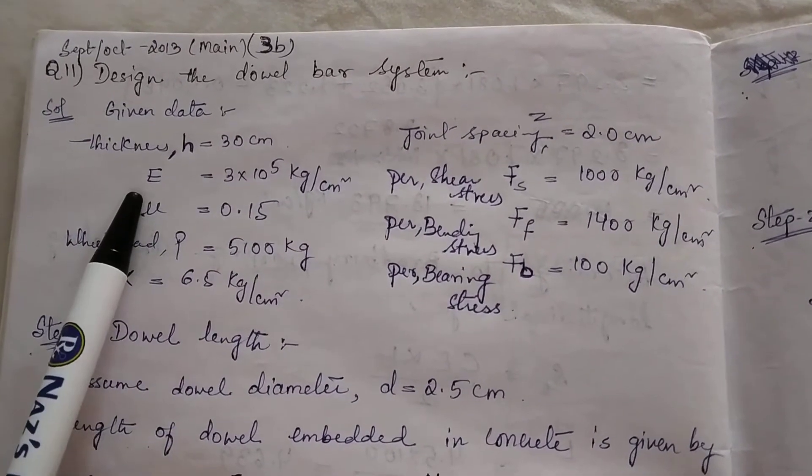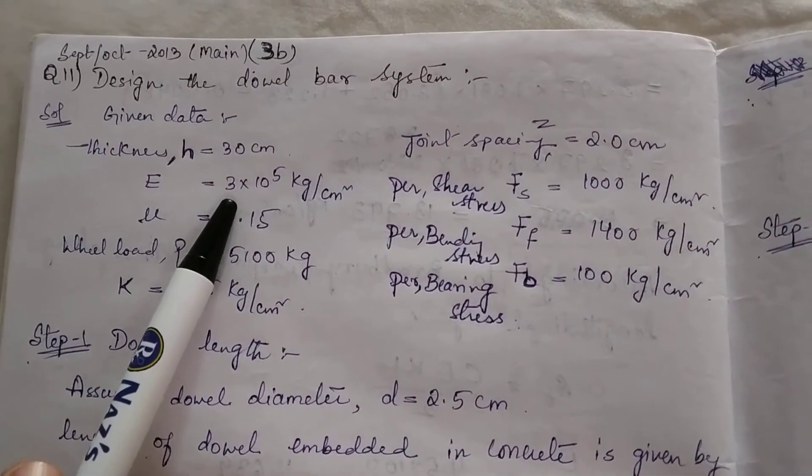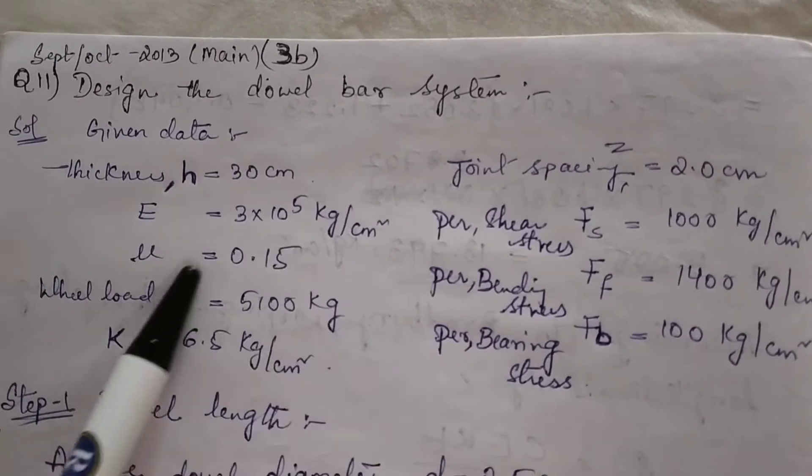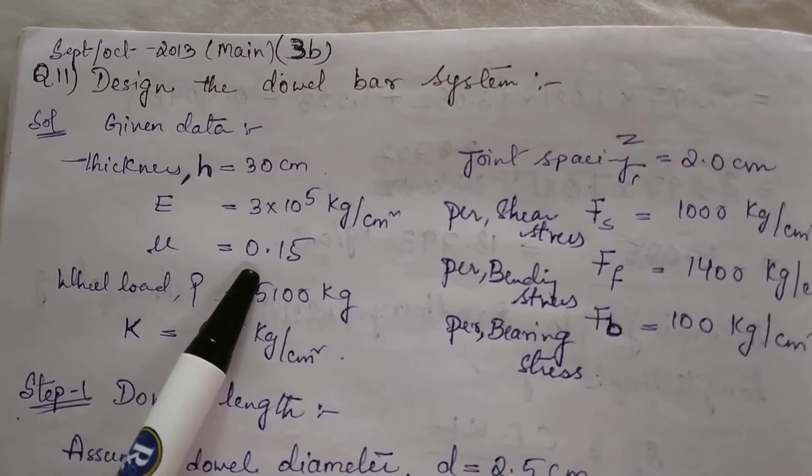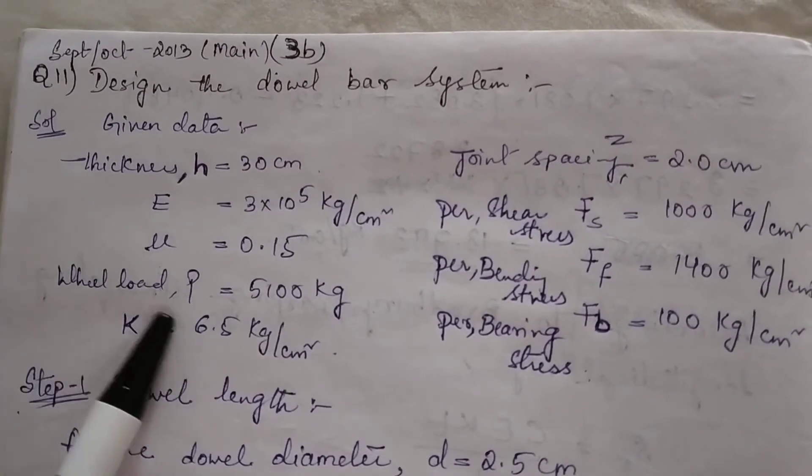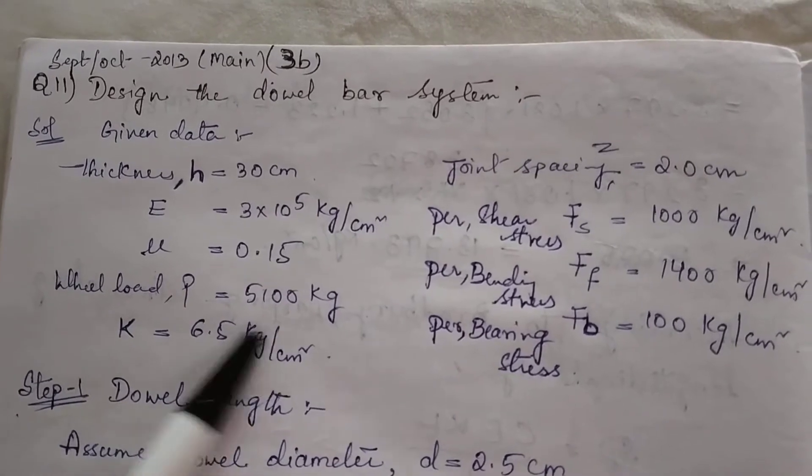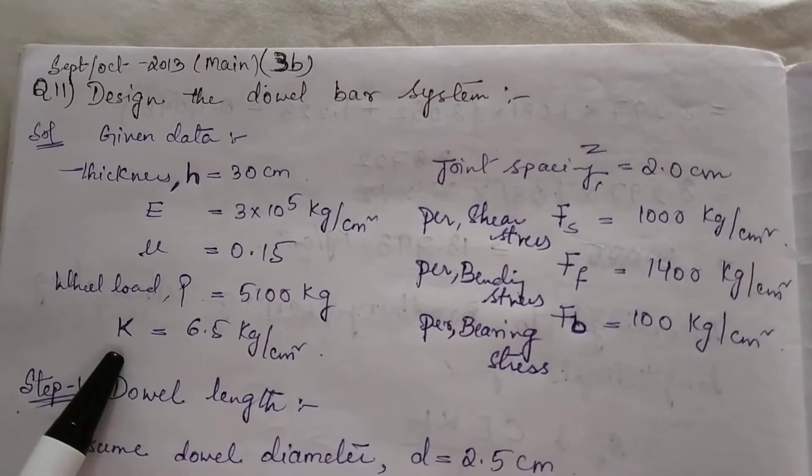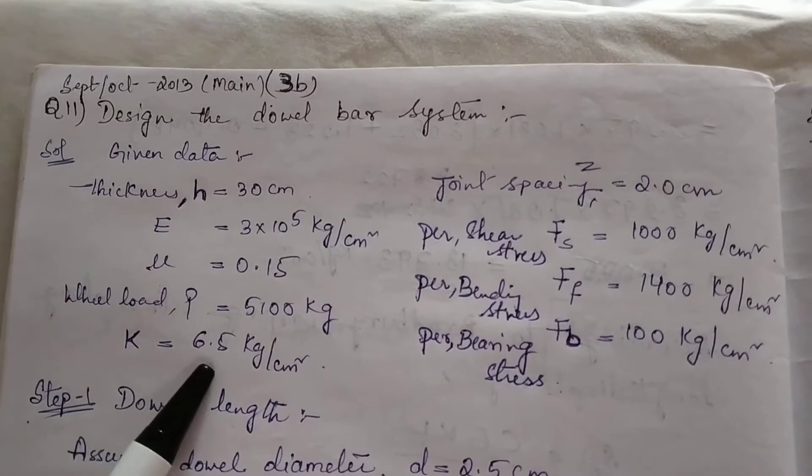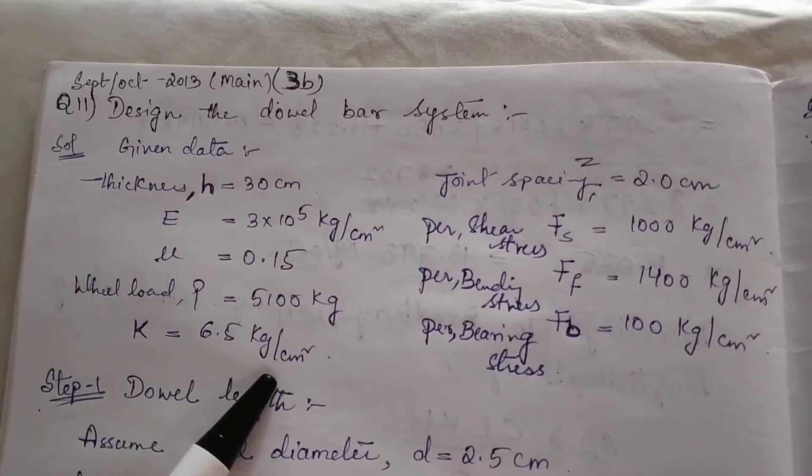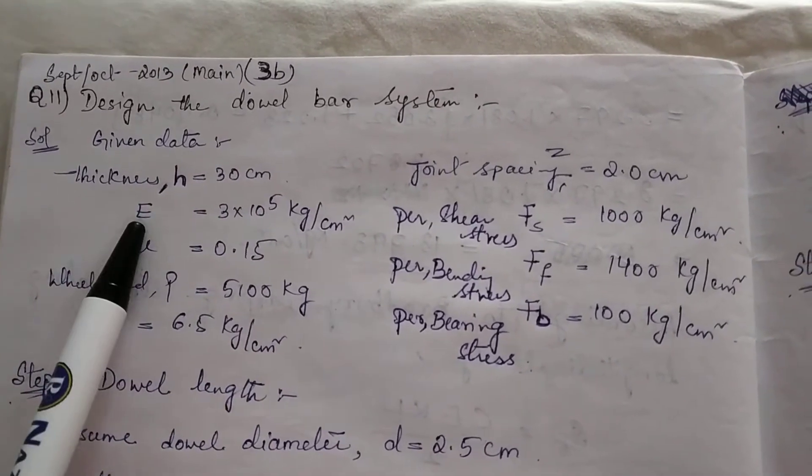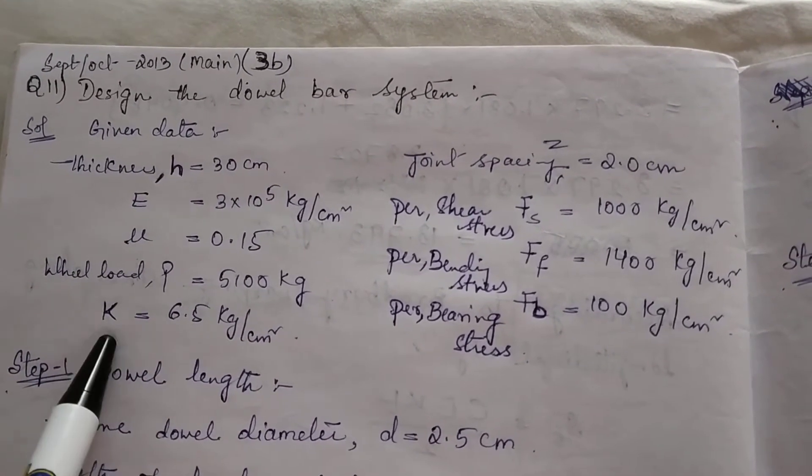Young's modulus E = 3×10^5 kg/cm², Poisson's ratio μ = 0.15, wheel load P = 5100 kg, modulus of subgrade reaction K = 6.5 kg/cm². From all these values, E, μ, and K